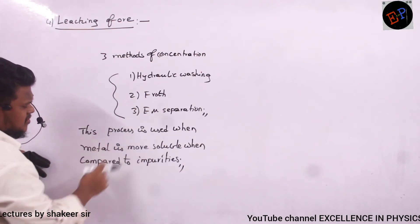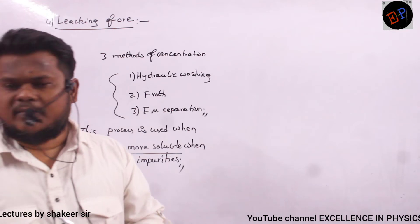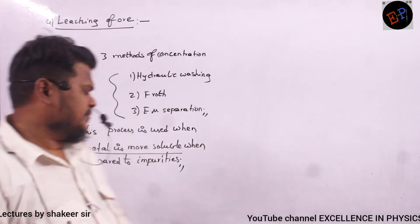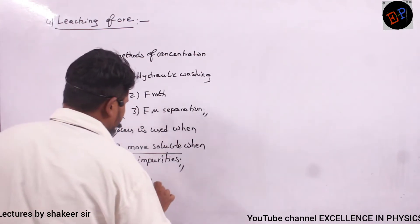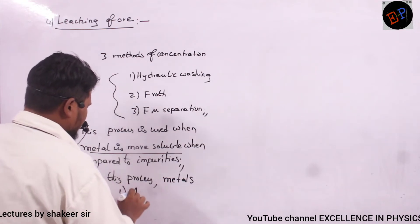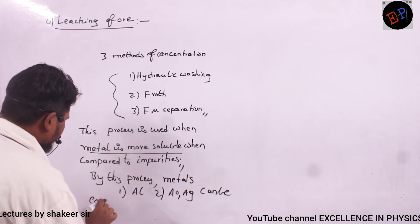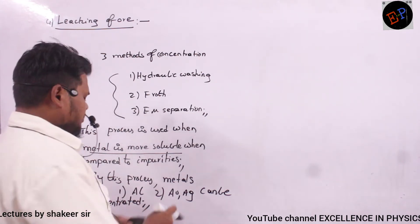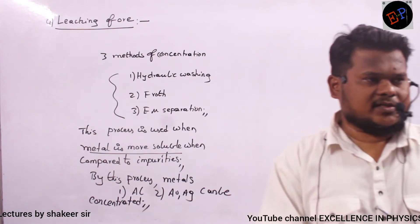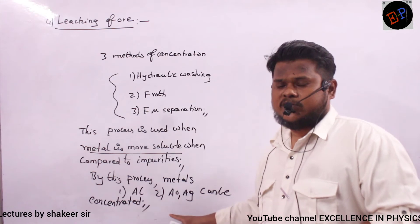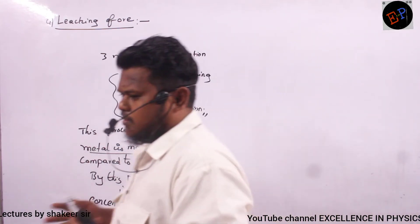By using the leaching process, the metals that can be concentrated are aluminium, gold, and silver. Questions can be asked on which metal is concentrated by which process. Pay attention to every detail — from this topic you will get only theory-based questions.